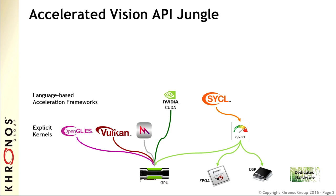We now have something that's kind of similar in terms of programming style to CUDA with SYCL, which is a Khronos API that builds on top of OpenCL, and through OpenCL can go out to the different heterogeneous processor types. It also takes a C++-based language approach for parallel programming for vision and other applications.